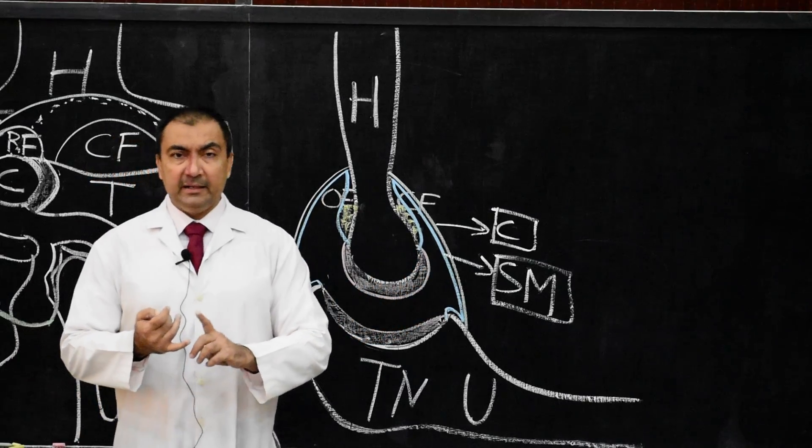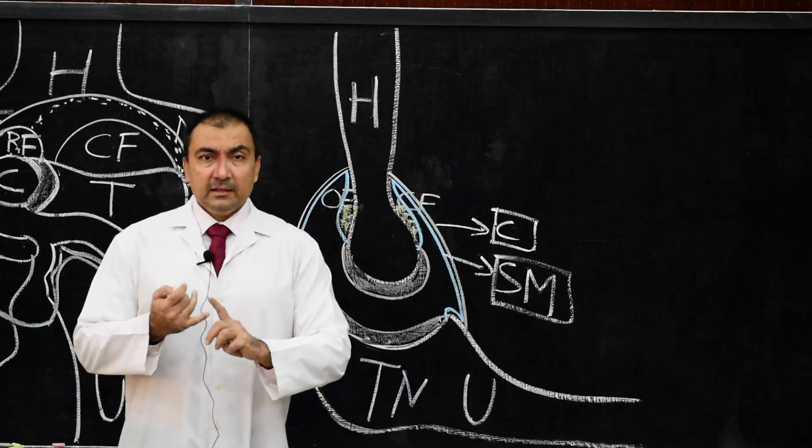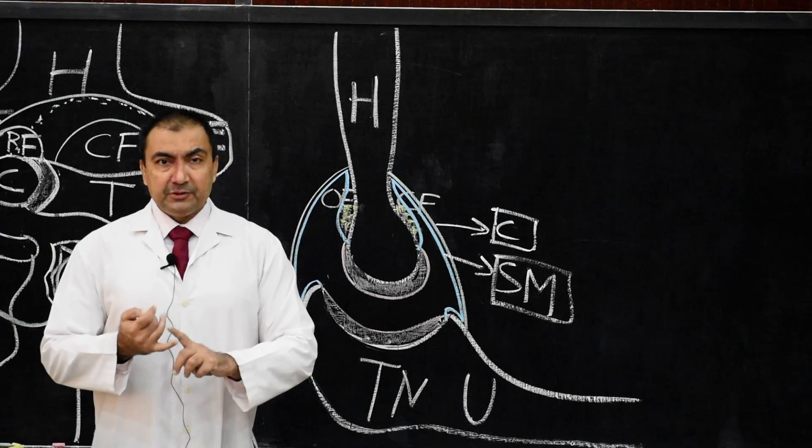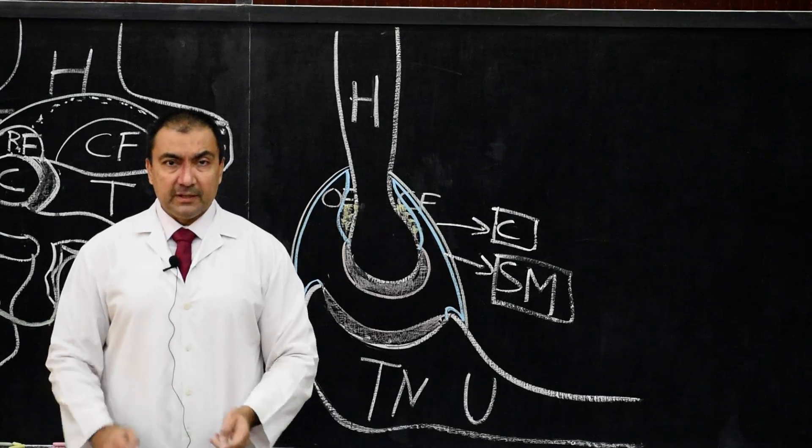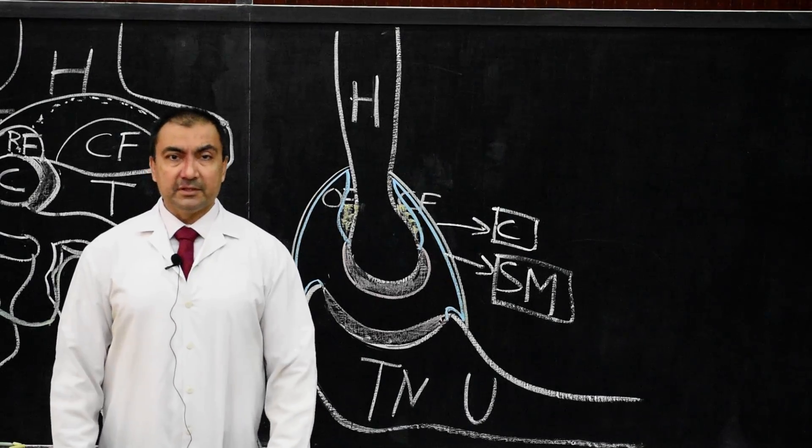Here we complete the definition, articulating surfaces, fibrous capsule, and synovial membrane of the elbow joint. Thank you very much.